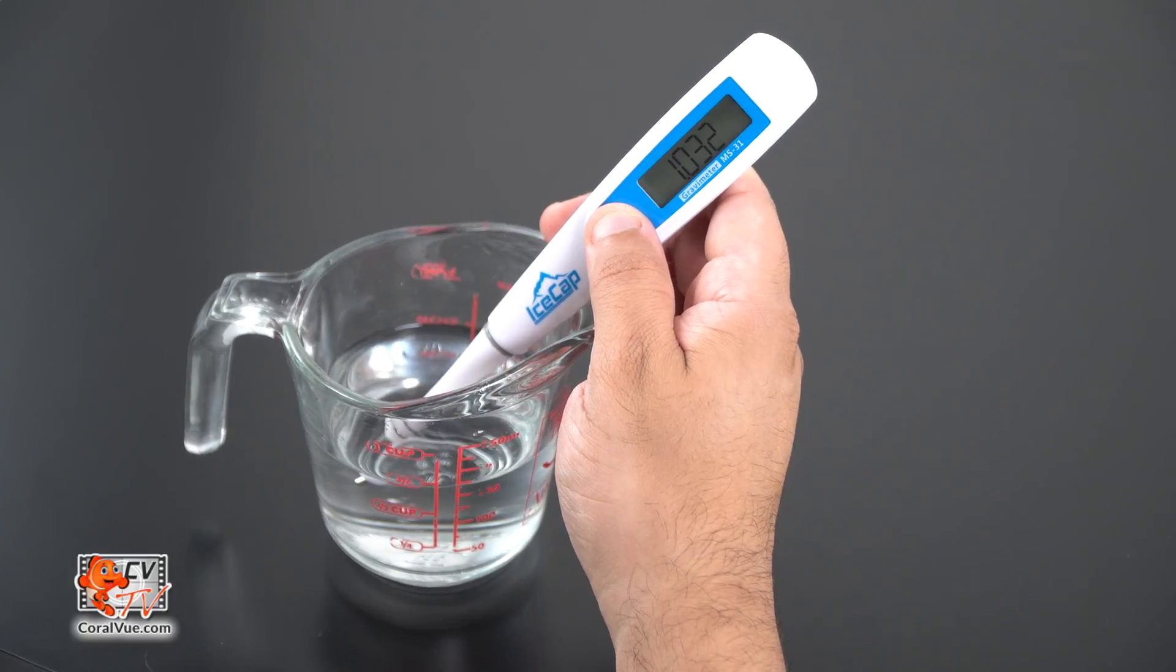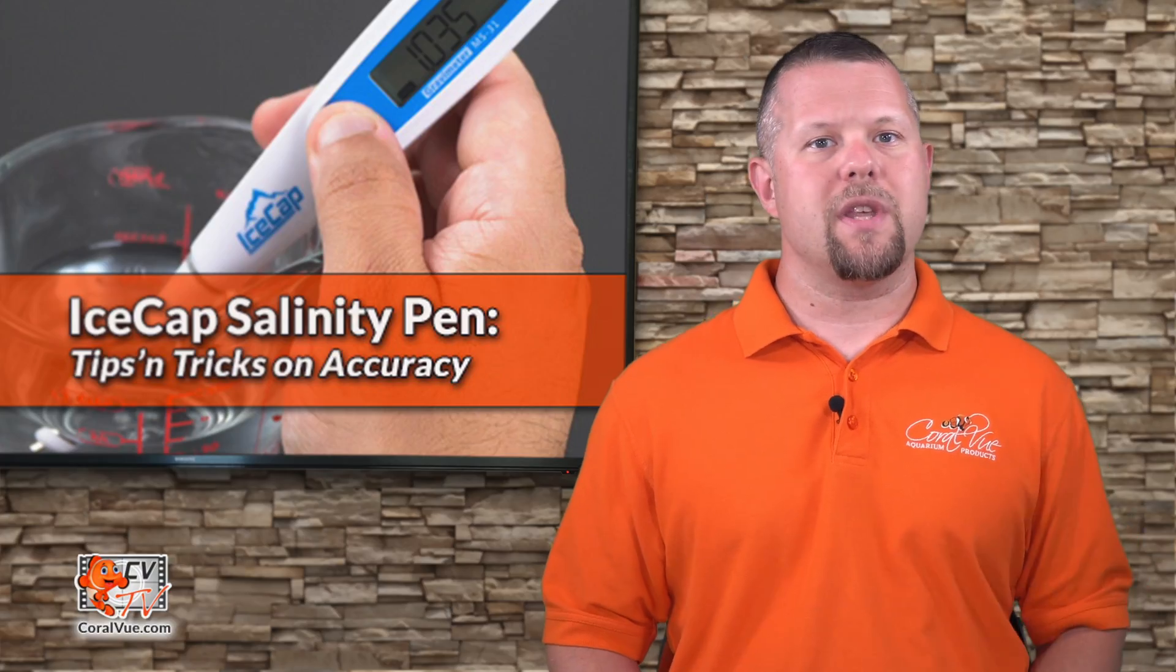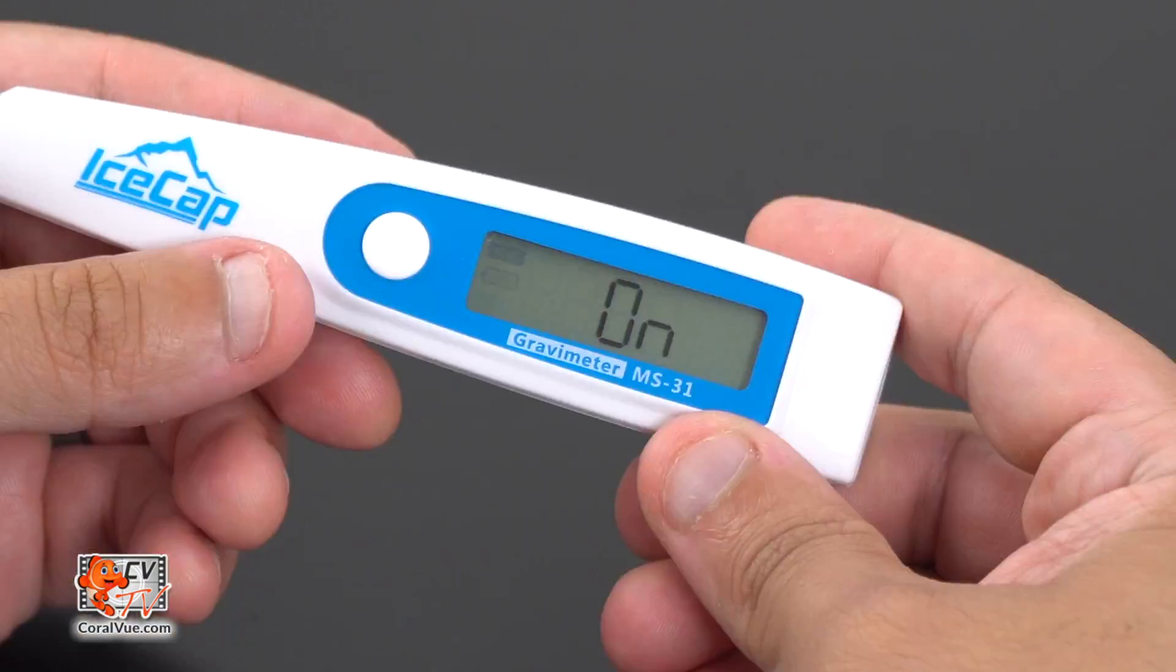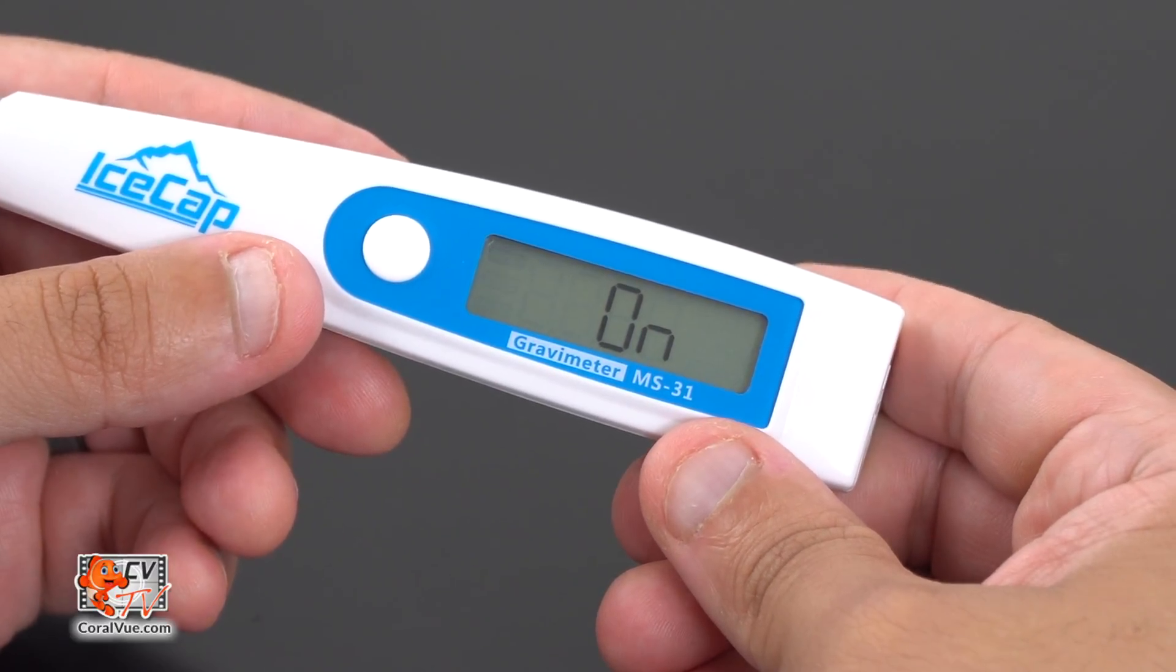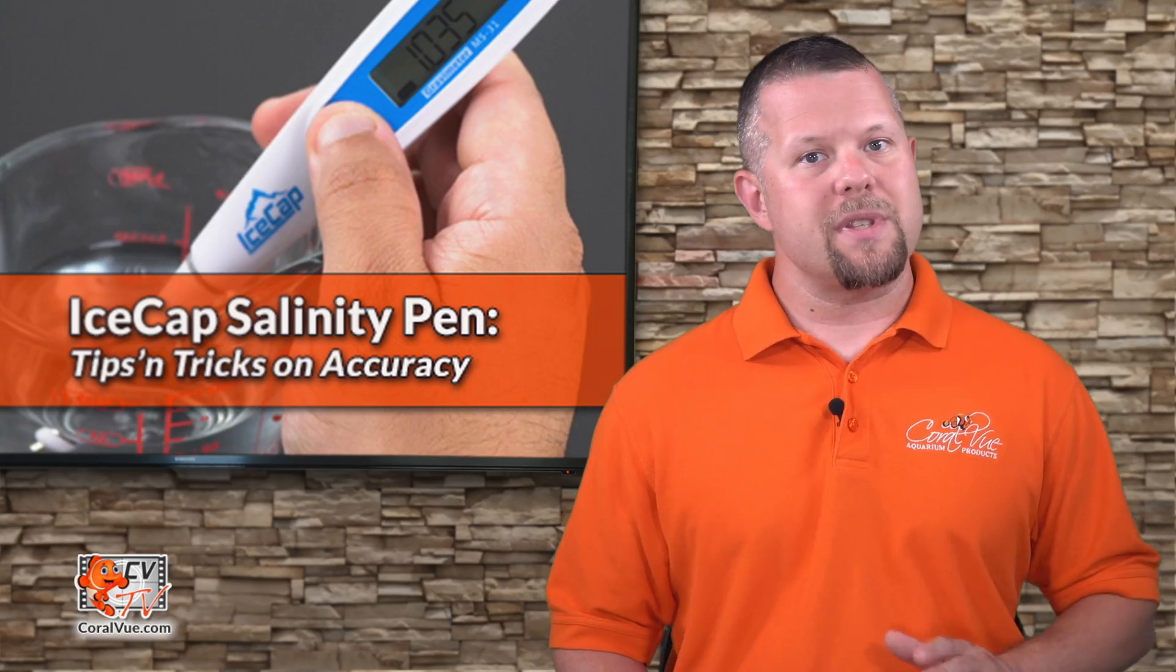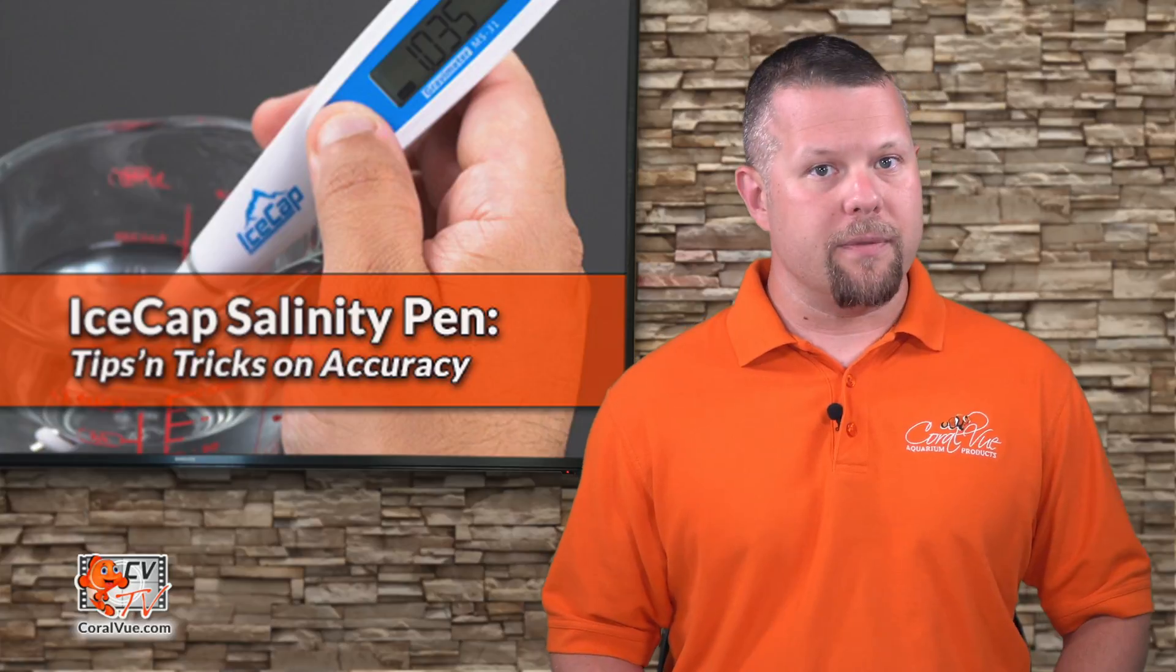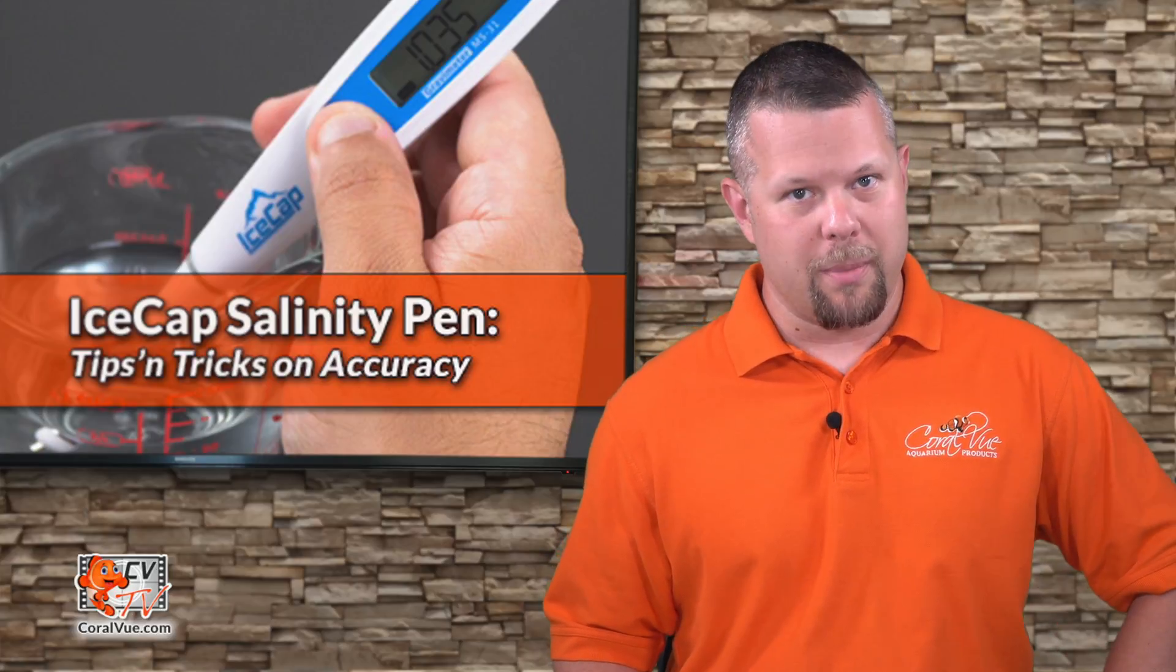If you find your salinity pen readout to be off, the first thing you should do is check the batteries. Normally the pen will alert you when your batteries run low, but sometimes it is best not to wait for that warning before checking the batteries.